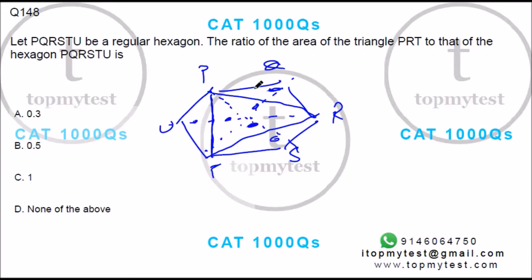Area of this triangle will be half of the full hexagon. Option B is your correct choice. That finishes this question.